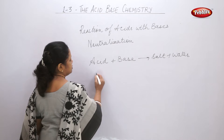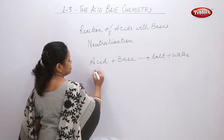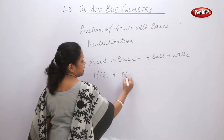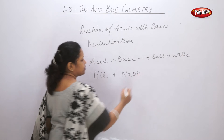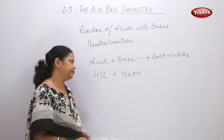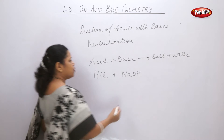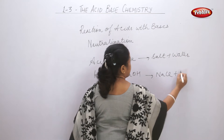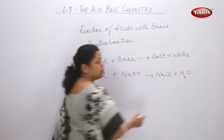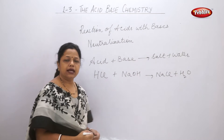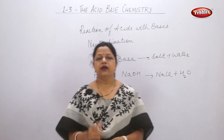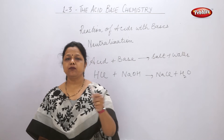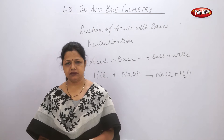We can show this with an example. Let us take acid HCl and base NaOH — a common acid and a common base. What we form is NaCl, which is the salt, and H2O, which is water. This reaction is called a neutralization reaction. There is Activity 3.13 on page 26.